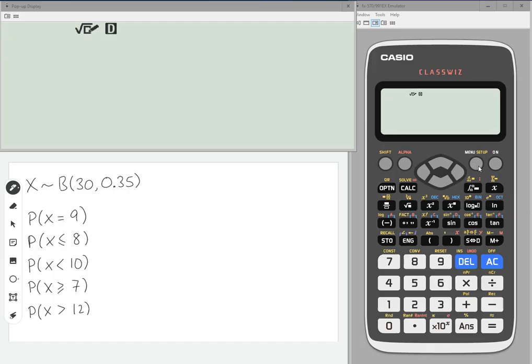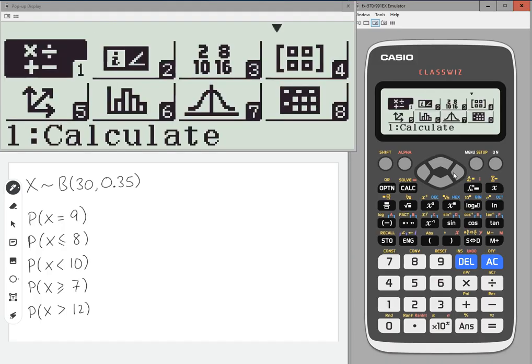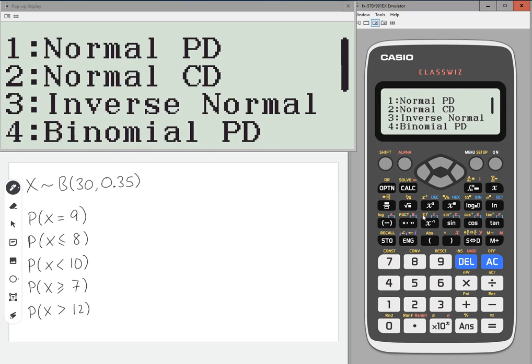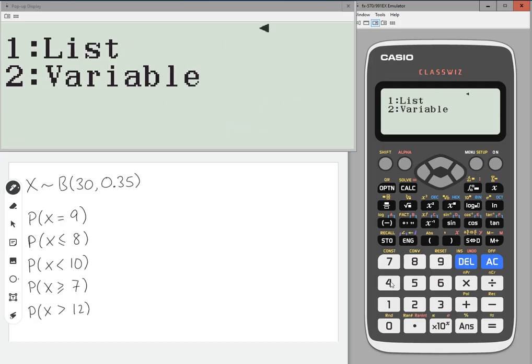So, probability of x being equal to 9, this is the only one of these where I'm going to use binomial PD, because PD finds a particular value. Go to menu, and then you need to scroll to number 7, Distribution.